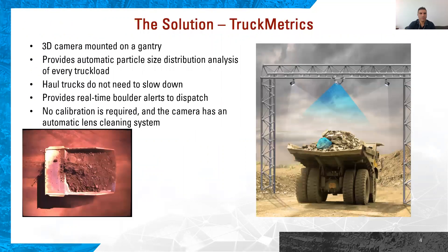Our solution is Truck Metrics. Truck Metrics is a 3D camera mounted on a gantry that provides automatic particle size distribution analysis of every truckload. All trucks do not need to slow down. It provides real-time boulder alerts to dispatch. No calibration is required, and the camera has an automatic lens cleaning system.